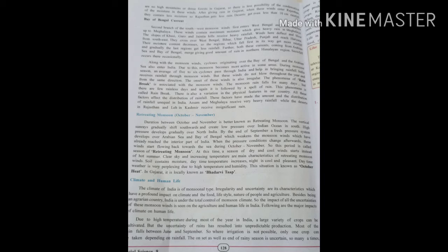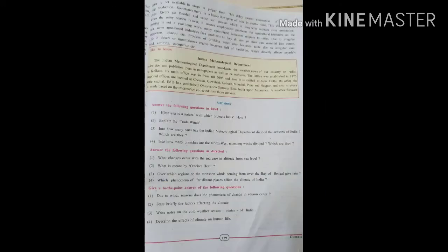Following are the major impacts of climate on human life: Due to high temperature during most of the year in India, a large variety of crops are grown, but the uncertainty of rain has resulted in unpredictable production. Most of the rain falls between June and September, so where irrigation is not possible, only one crop can be taken depending on rainfall. The onset as well as end of the rainy season is uncertain, so many times water is not available to the crops at the proper time.